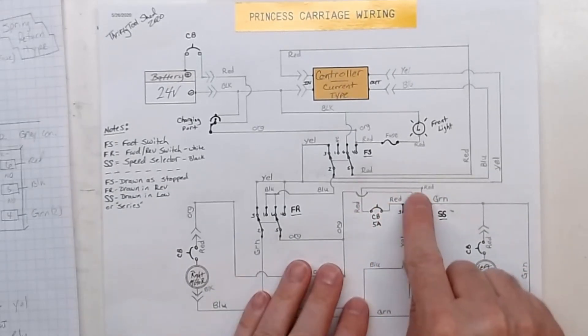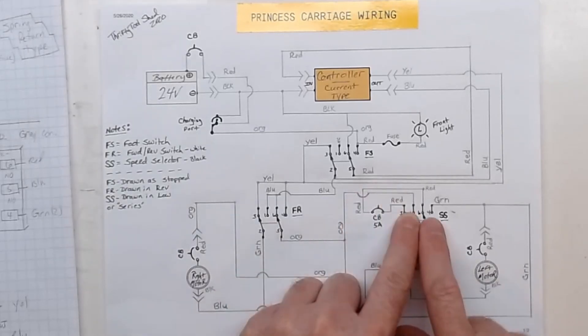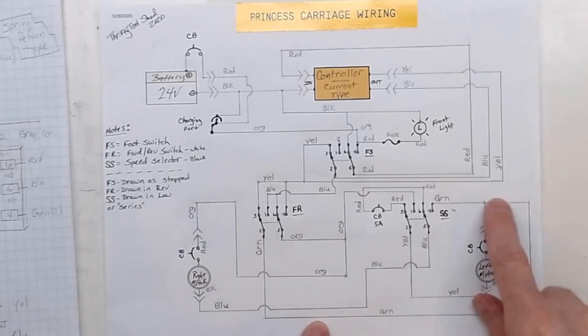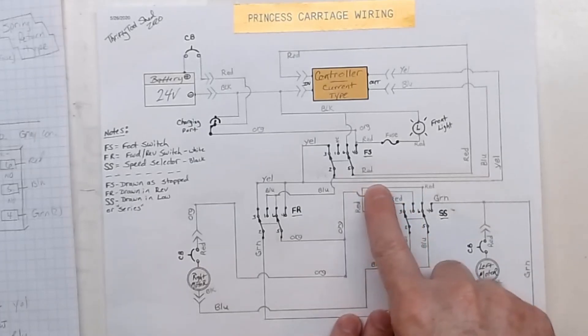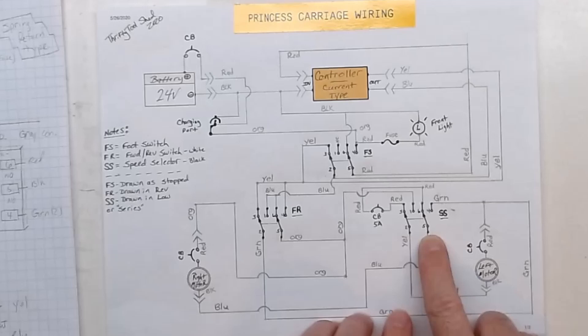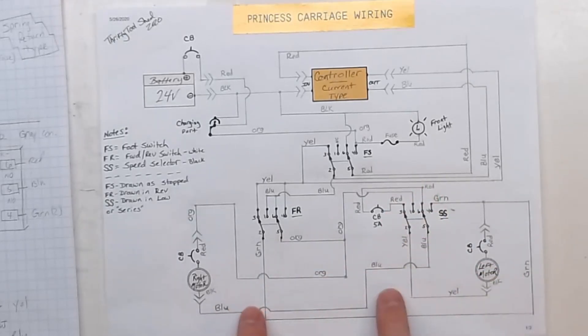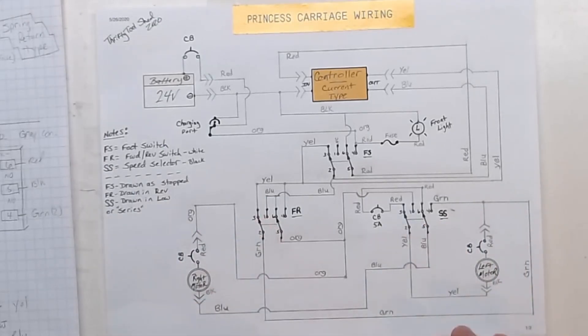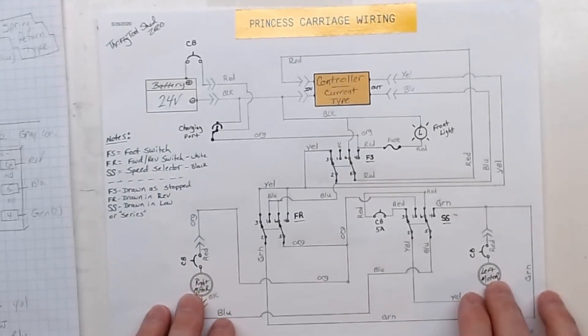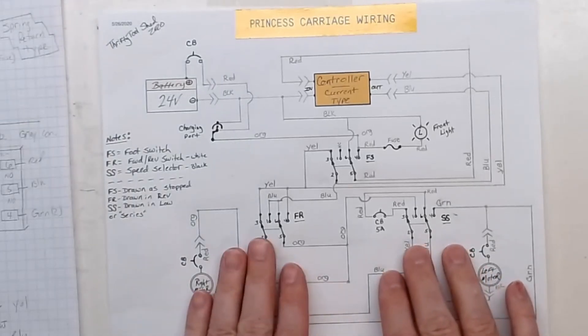The reason I say series - the circuit breaker puts the motors in series. Orange comes up to the switch, green comes over to the switch, and with the closed contacts we're going through the red wire through the 5 amp circuit breaker back to red. In this configuration we're going back to yellow and blue, so our left and right motors are in series with 24 volts across them.